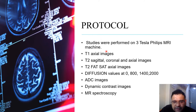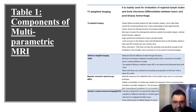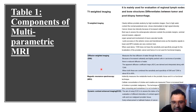All studies were performed on a 3 Tesla Philips MRI machine. The protocol used was T1 axial images, T2 sagittal images, coronal and axial images, T2 fat-sat axial images. Diffusion values were taken at B values of 0, 800, 1400, and 2000. ADC images were taken, dynamic contrast study was done, and MR spectroscopy was also performed. Components of multi-parametric MRI include T1 weighted imaging, T2 weighted imaging, diffusion weighted imaging, MR spectroscopy, and dynamic contrast images.